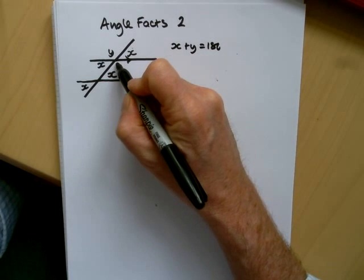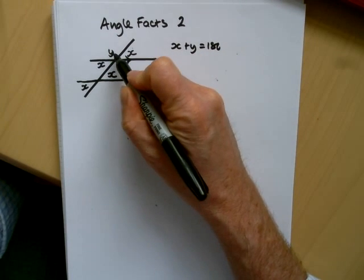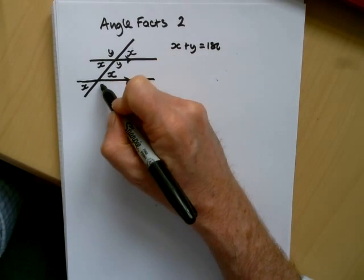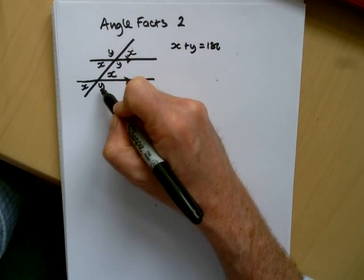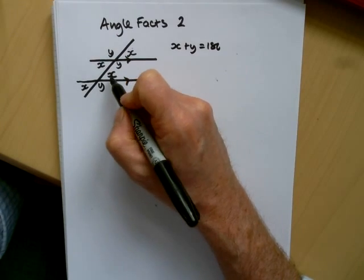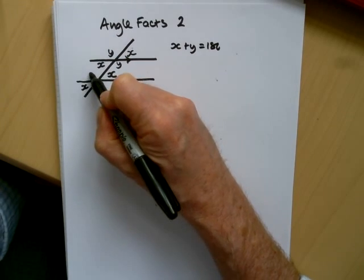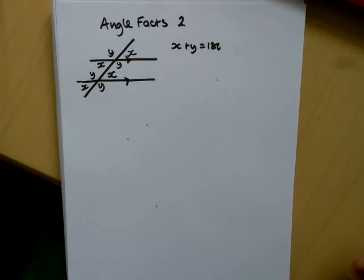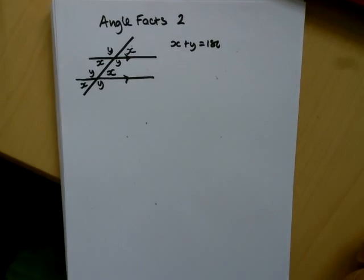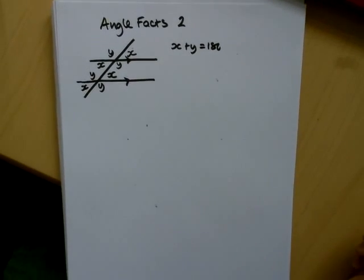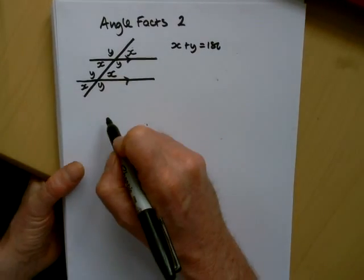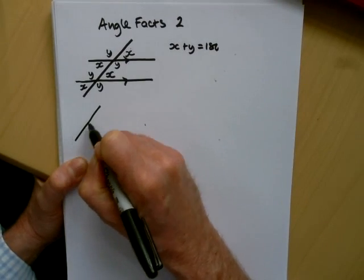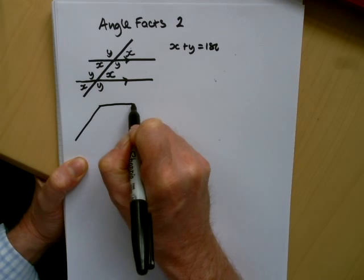If we look here, these y's are opposite angles, and again it would be y here, because y and x make 180, and y there. That looks a little bit confusing, so we'll strip it down and look at the three different types of angles that come out.